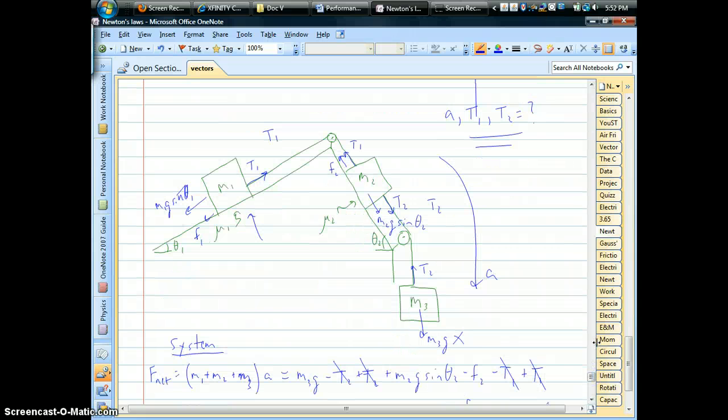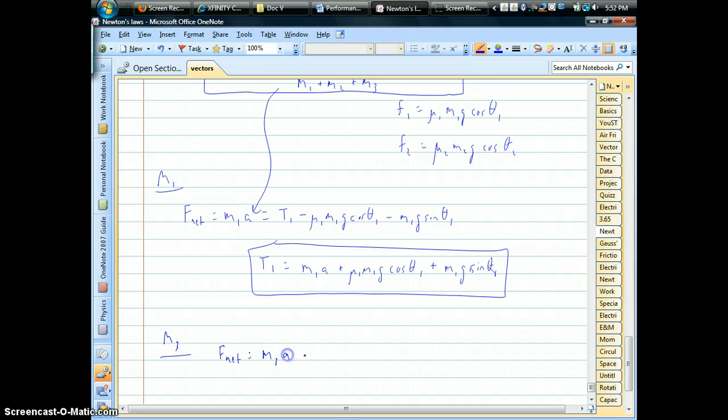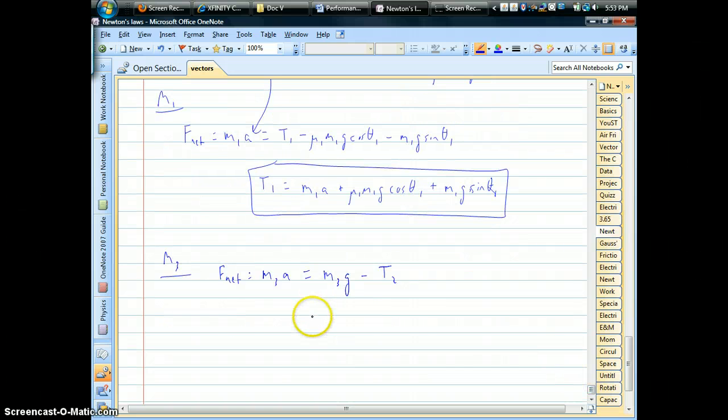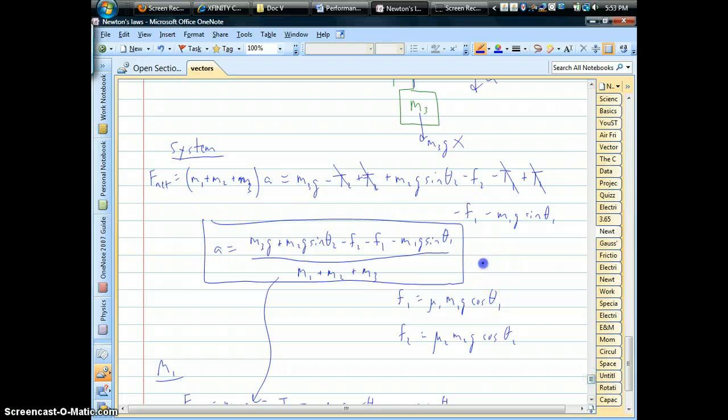Now to find tension two, you could use either one of the other two blocks. M two or M three. Obviously it's looking like M three is the easier one. So choose that. It's only got two forces acting on it. So when I isolate M three and do F equals MA, it'd be the same acceleration expression or the same value. And now in that case, it's accelerating down. So the weight is going to be bigger than tension two. And we can solve for tension two. And just like that, we've got our internal forces. We've got the acceleration.